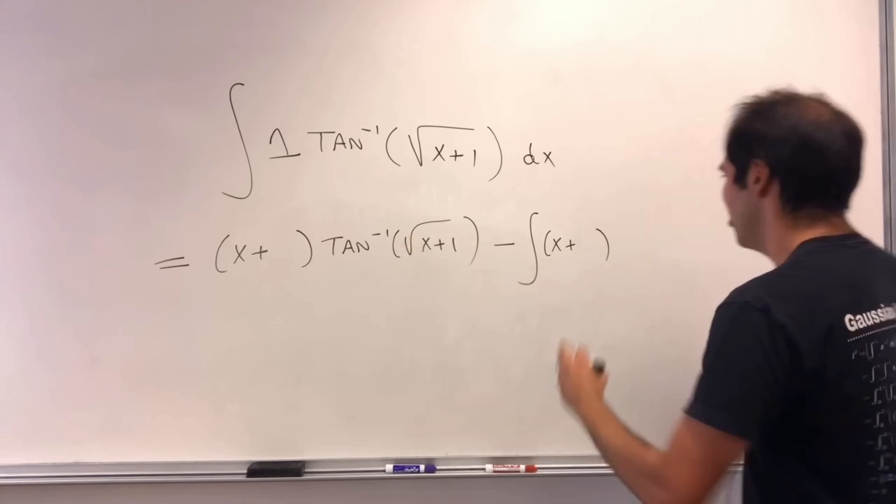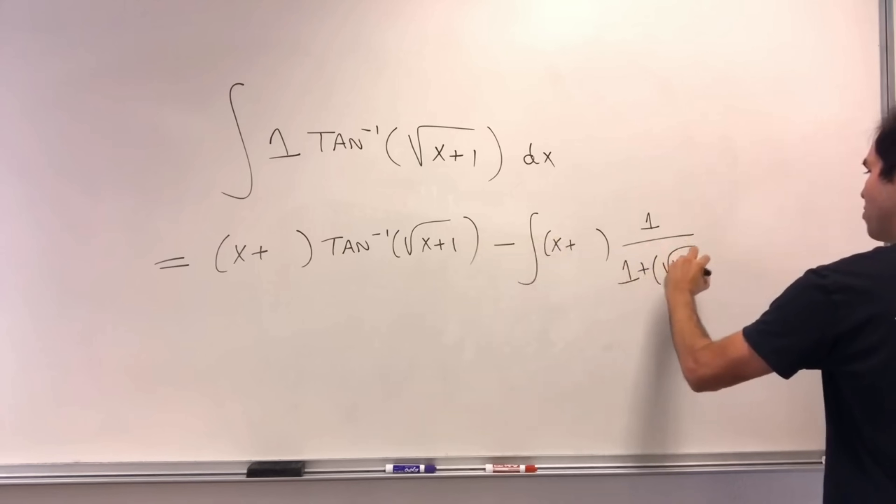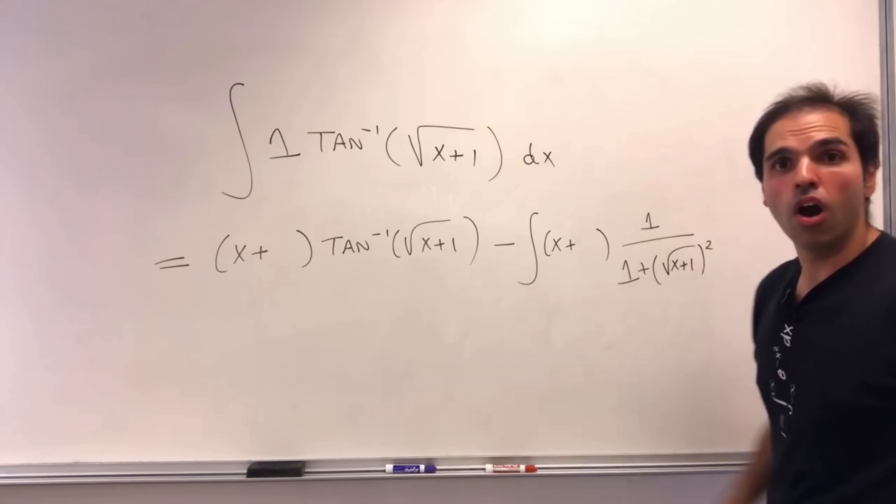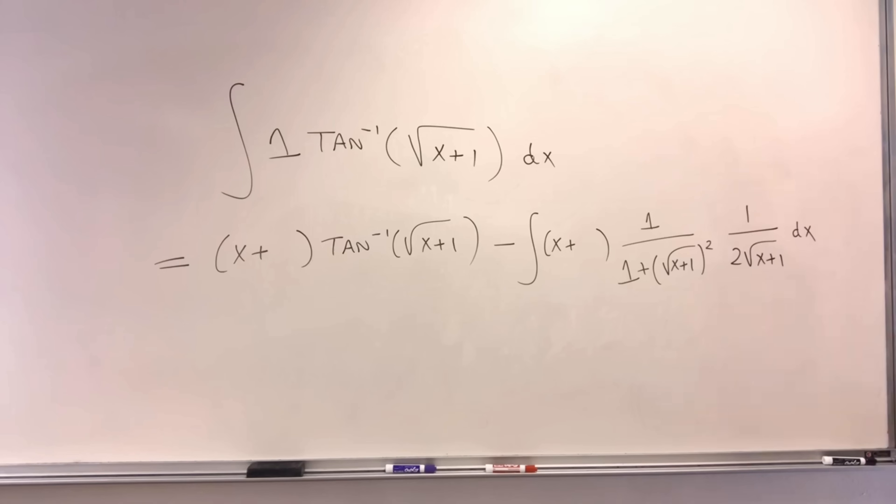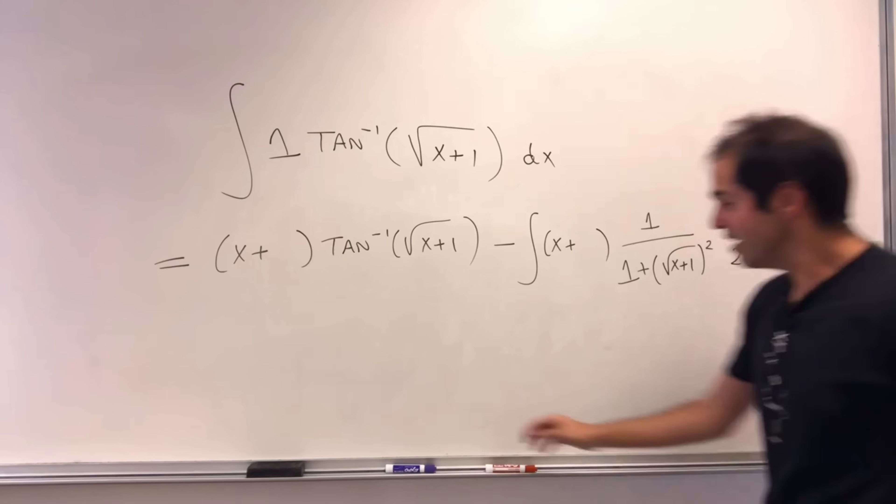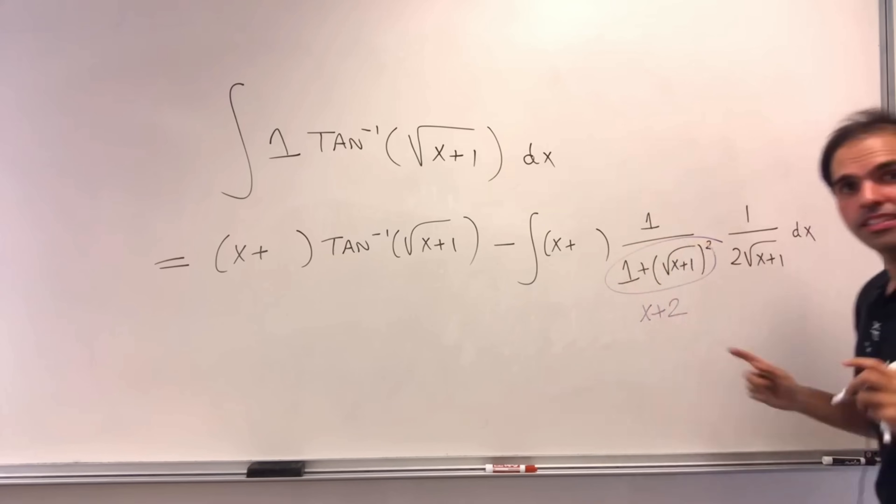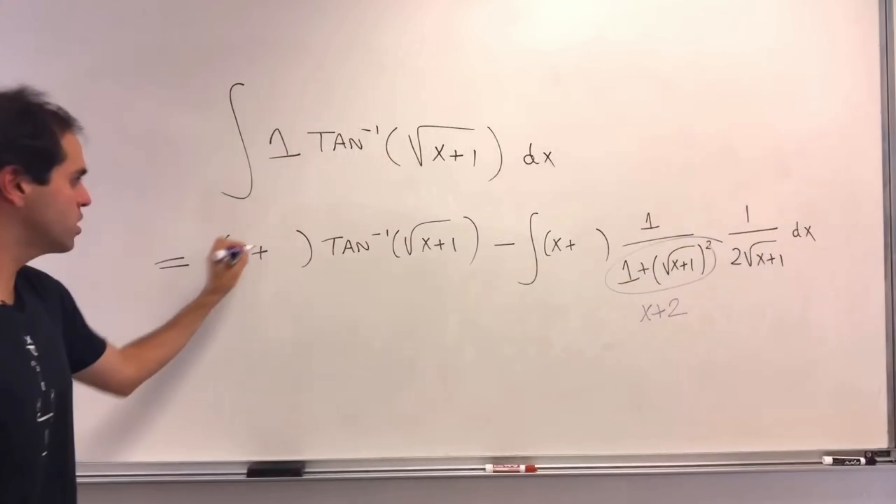Now, for arctangent, let's use the chain rule. So this becomes 1 over 1 plus blah squared, so square root of x plus 1 squared, times a derivative of square root of x plus 1, so 1 over 2, square root of x plus 1 dx. And here's the thing, notice the denominator now just becomes x plus 2. So instead of choosing x plus 1, how about we choose x plus 2?